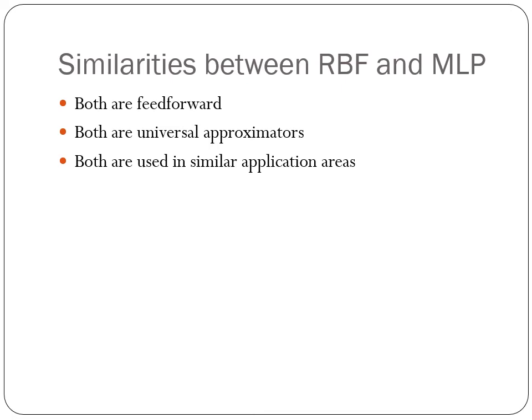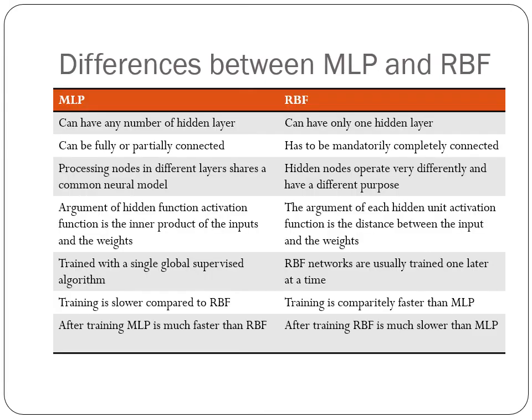Let us see the similarities between RBF and MLP. Both are feedforward. Both are universal approximators and they are used in simulation areas. However, MLP and RBF are different in some respects. It is based on the number of hidden layers. Where MLP can have any number of hidden layers, RBF can have only one hidden layer. MLP can be partial or fully connected whereas RBF has to be mandatorily completely connected. The processing nodes in different layers share a common neural model in the case of MLP. Like if it is feedforward, all the activation functions will be same throughout all the layers. But in this case, the hidden nodes operate very differently and have a different purpose.